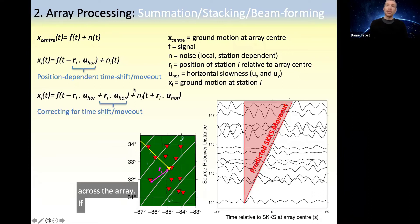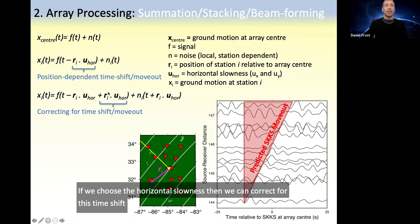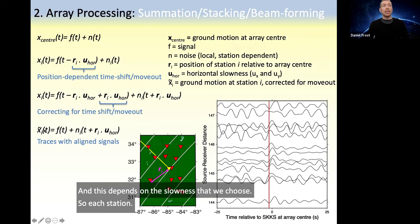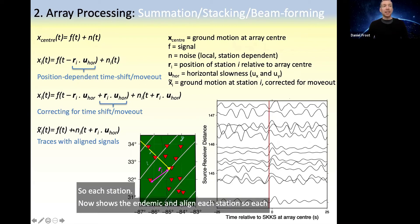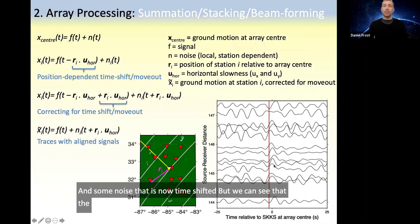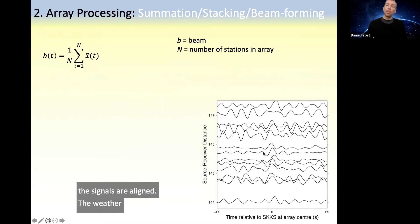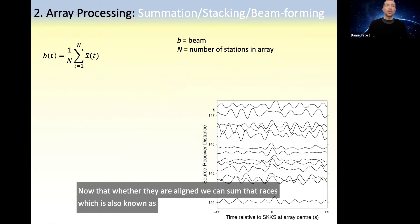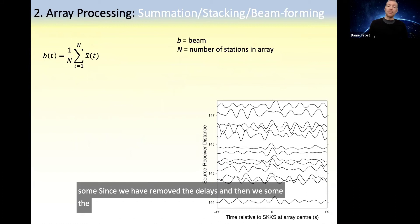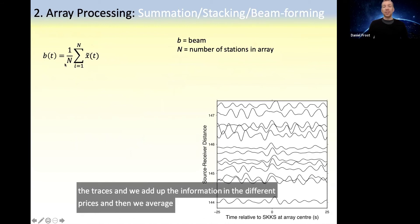If we choose the horizontal slowness, we can correct for this time shift — we can predict the time shift and add it back in. This depends on the slowness that we choose. We can then align each station so that the signal is aligned and the noise is time-shifted. Now that they're aligned, we can sum the traces, which is also known as stacking. It's also called beamforming since we form the beam B, and also known as delay-and-sum since we remove the delays and then sum the traces. We add up the information in the different traces and then average over the number of stations in the array N.